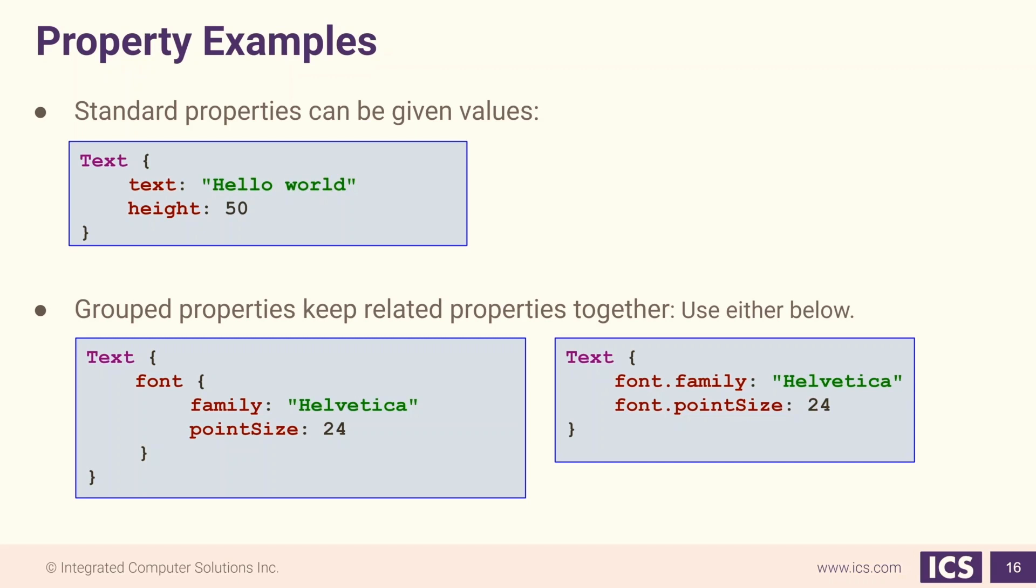However, we can also set them individually. We need to fully qualify the name. In our example here, we use font.family to set the font family and font.pointSize to set the point size. This method is useful if you're only setting one of the properties or trying to get a value from a group property.